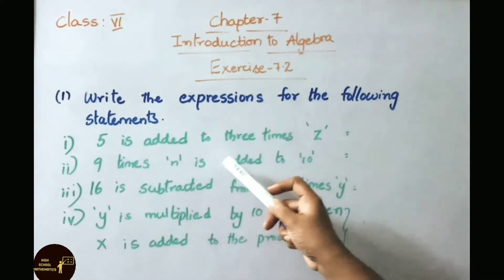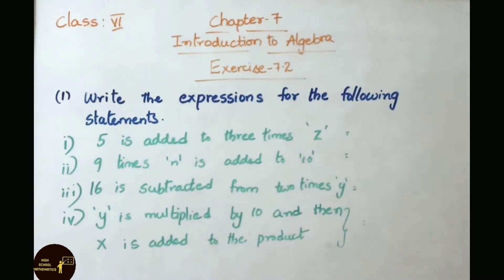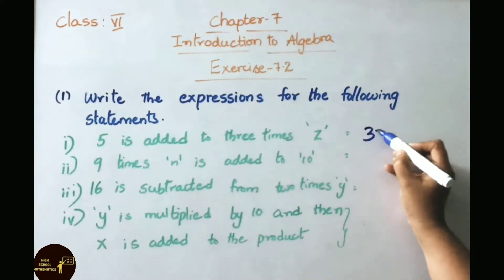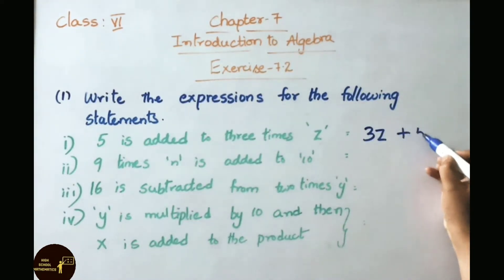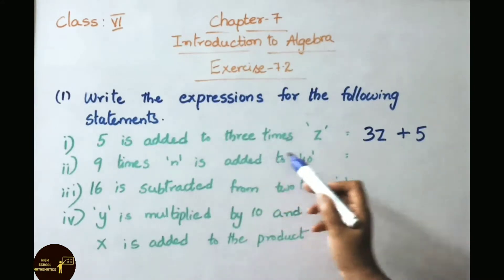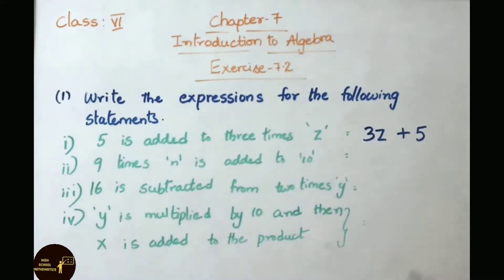Write the expressions for the following statements. 5 is added to 3 times Z. 3 times Z means 3Z. This is added to 5, so the rule is 3Z plus 5.